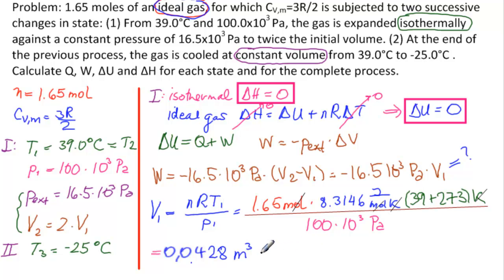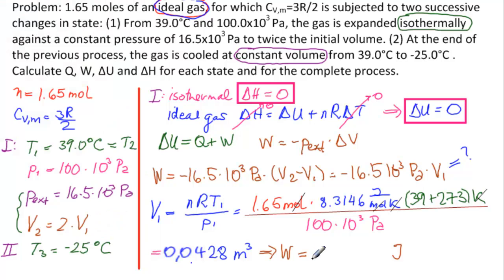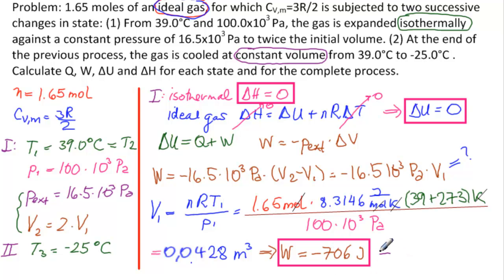So V1 = 0.0428 m³. Then W = −16.5×10³ Pa × 0.0428 m³ = −706 J. Since ΔU = Q + W = 0, we get Q = −W = +706 J. The system is absorbing heat and doing work, with no change in enthalpy or internal energy during the first process.